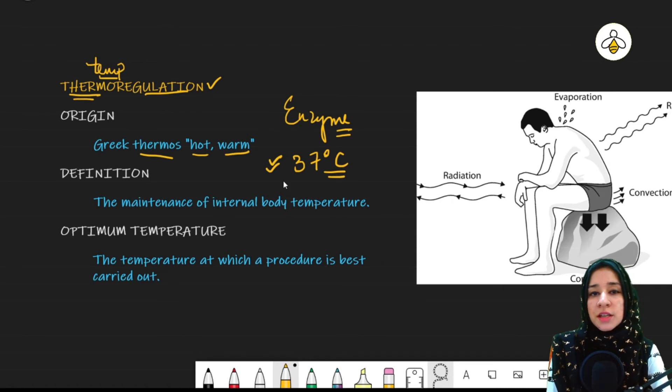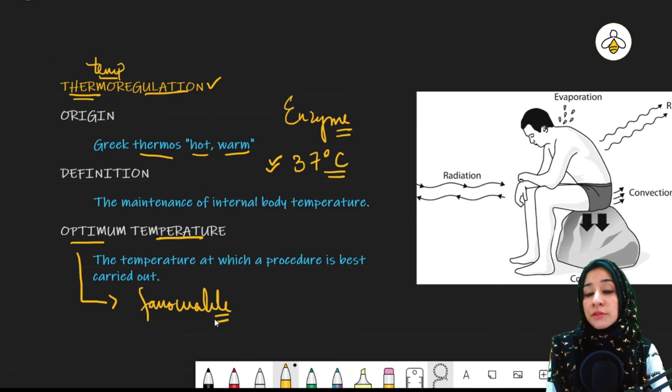Now what is 37 degrees celsius temperature? What do we call it? It is known as optimum temperature. The meaning of the word optimum is favorable. So this is that temperature in which the enzymes are going to show the maximum activity, the best activity. That is the optimum temperature.